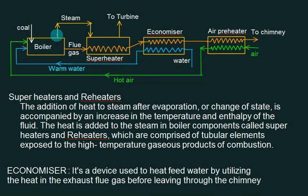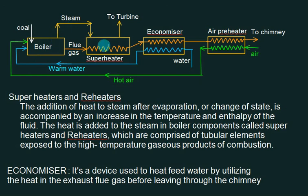In the boiler, we assume that the steam formed is dry and saturated. If we want superheated steam, we use a superheater. So we have boiler, superheater, economizer, and air preheater. In the air preheater, we raise the temperature of air by means of flue gases. In the economizer, we raise the temperature of water fed to the boiler. In the superheater, we convert the dry saturated steam into superheated steam, which is given to the turbine.